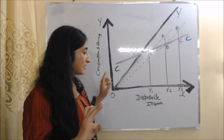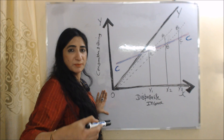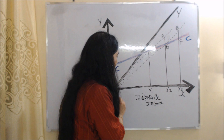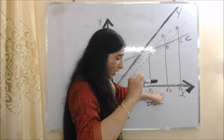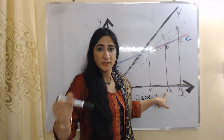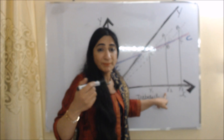Person A's income is OY1 and person A's consumption is AY1. Person B's income is OY2 and person B's consumption is BY2. Now suppose person A's income increases from OY1 to OY2, and person B's income increases from OY2 to OY3. When person A's income increases from OY1 to OY2, according to the consumption function, person A should consume BY2. But person A is actually consuming A1Y2.